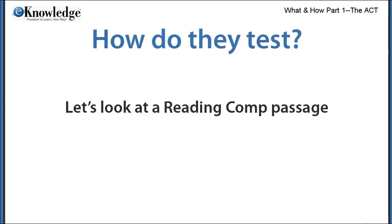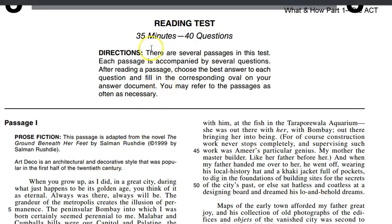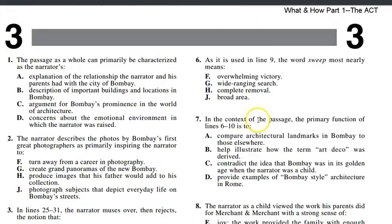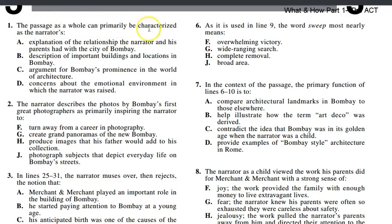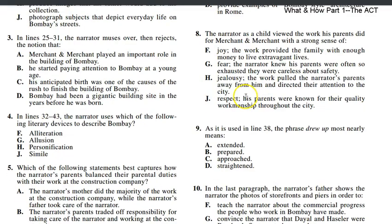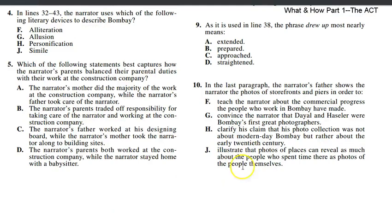Here you see the directions: a 35-minute exam with 40 questions. This is passage one — a prose fiction type passage — with 87 lines, about 850 words, and about 10 questions. They will ask the types of things you're used to seeing on reading comp questions, such as 'What is the primary purpose of the passage?' and questions asking you to look at specific lines, like line 38. These are the same kinds of questions that appear on reading comp questions you've seen before.